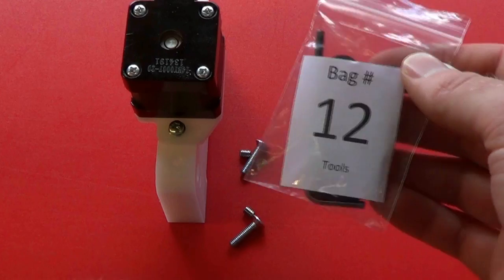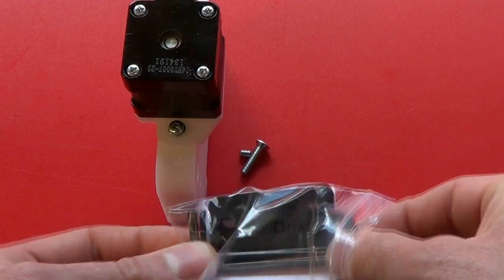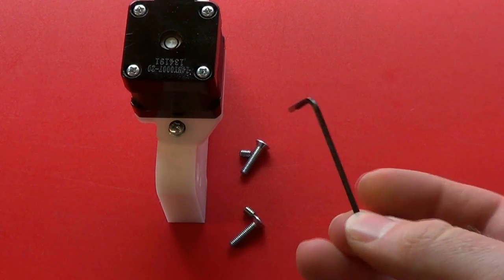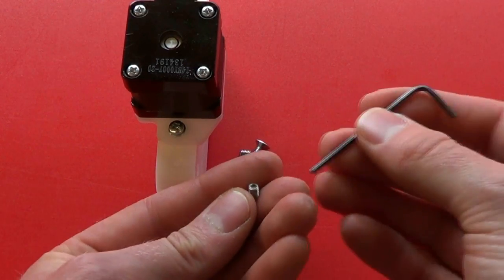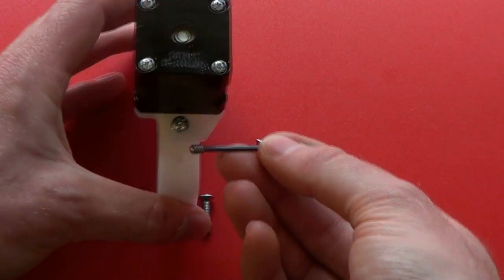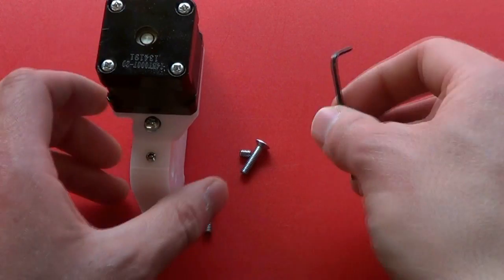From bag number 12 which has various tools in it, take out the smaller two allen keys, that's the 2mm one, and insert the grub screws a few turns into the X support. Don't put them fully in, that will come later.